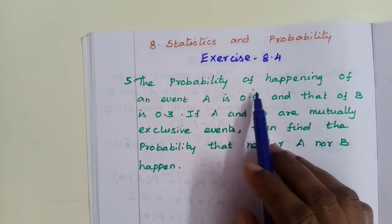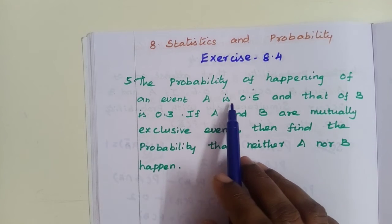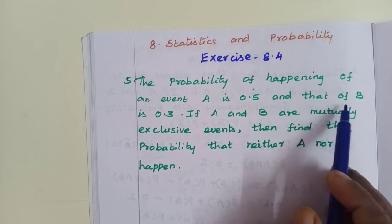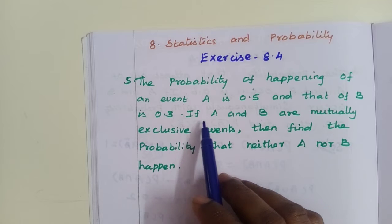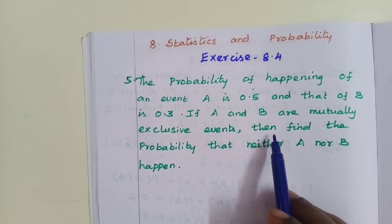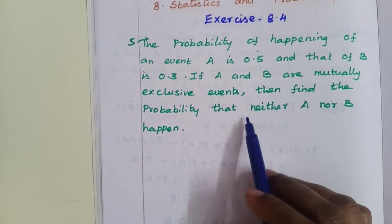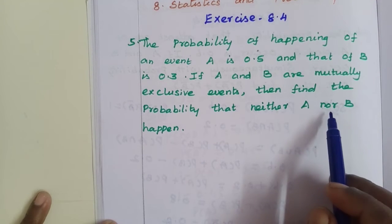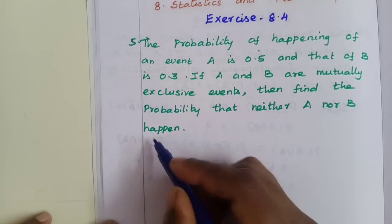The probability of happening of an event A is 0.5 and that of B is 0.3. If A and B are mutually exclusive events, then find the probability that neither A nor B happen.